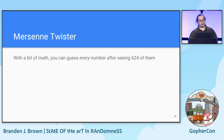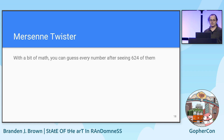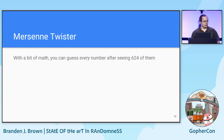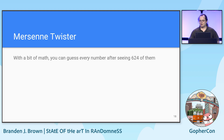From there, not only can you predict every number that it will produce, you can also reverse the sequence and see every number that it has produced. Not really a concern if you're using Mersenne Twister for a numerical simulation, but if you're for some reason using it to generate cryptographic nonsense for encryption — don't do that.